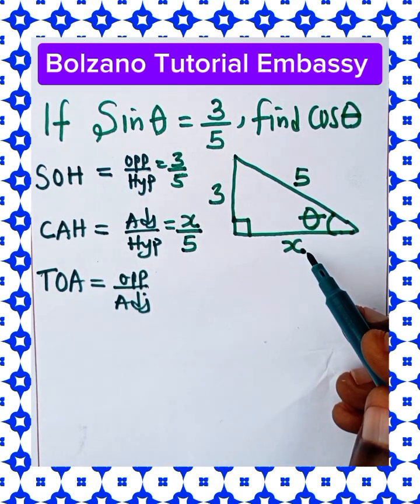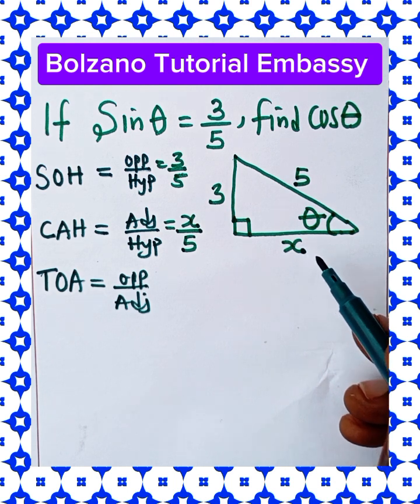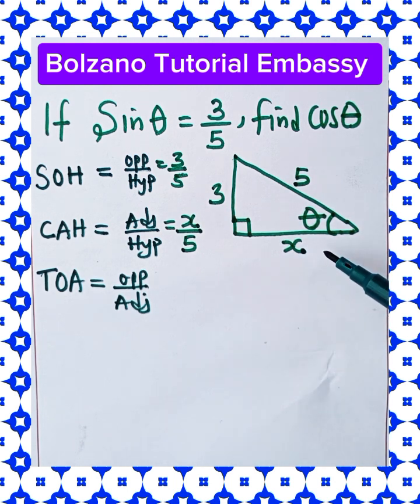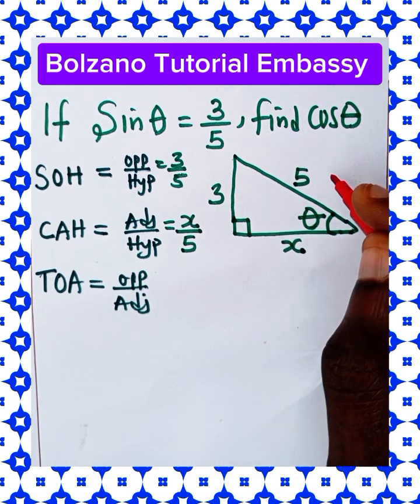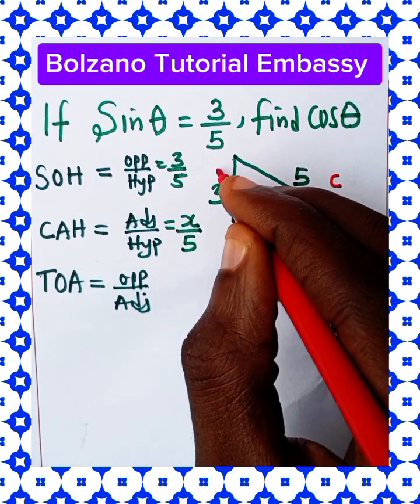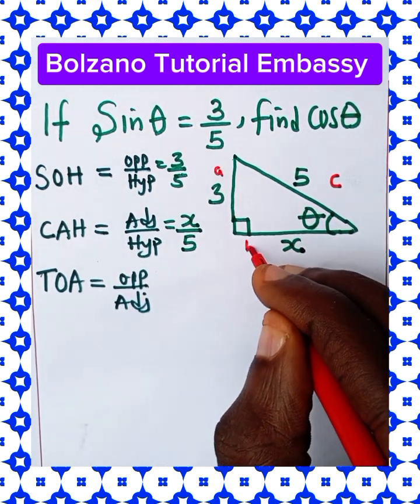So in order to determine the adjacent side, let's invoke Pythagoras to recover this unknown side. Let's say this is c, this is a, and this is b.